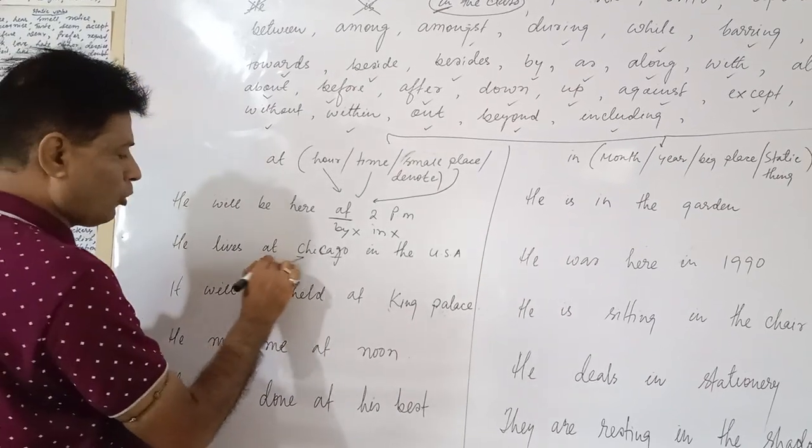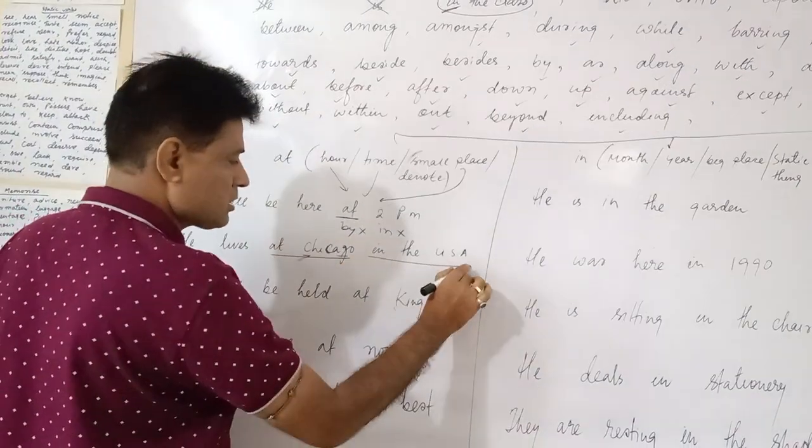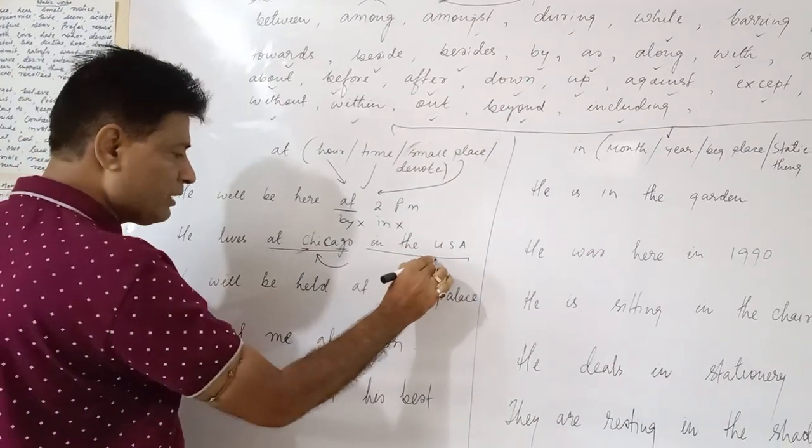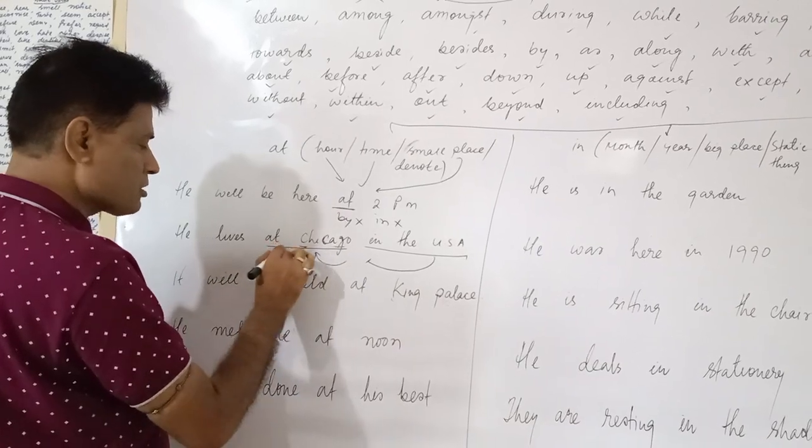He lives at Chicago, in the USA. At before a small place, in before a big place, you have to use at.